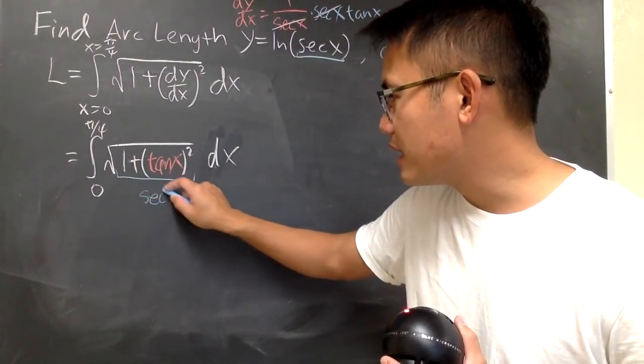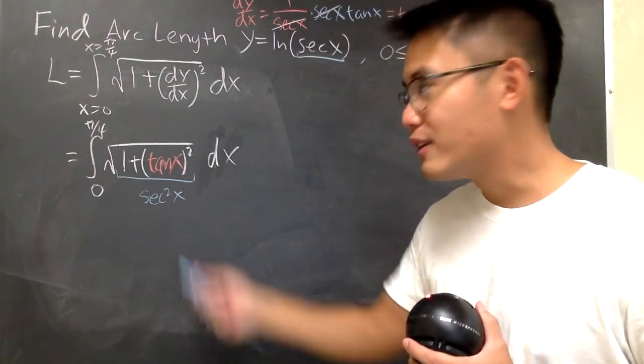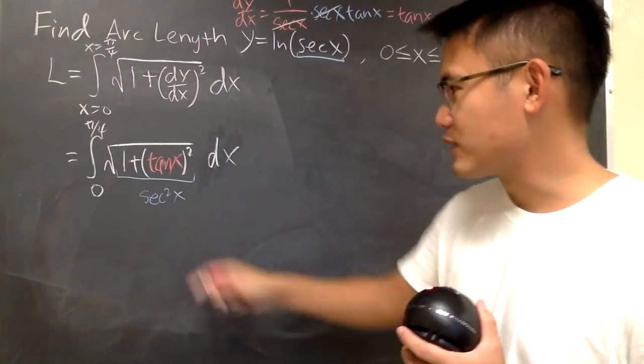So inside here you have sec²(x). And of course, don't forget, you still have the square root on the outside.